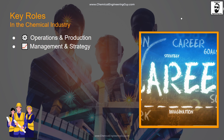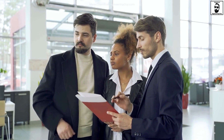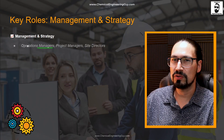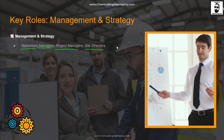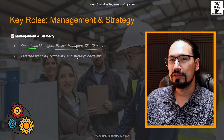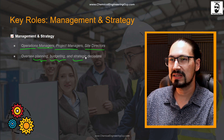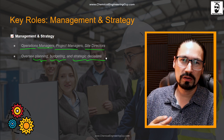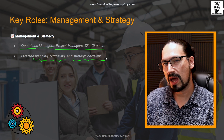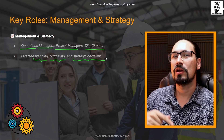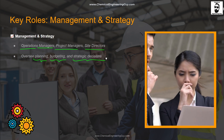Management and strategy roles are more towards administration — typically leadership roles such as operations managers, project managers, site directors, or plant directors. Depending on the stage of the chemical process lifecycle, they could be planning, budgeting, or making strategic decisions. If already in operations, they focus on understanding how much to produce, which clients to sell to, when to do maintenance, what to invest in during revamping, or whether to close or decommission a process.